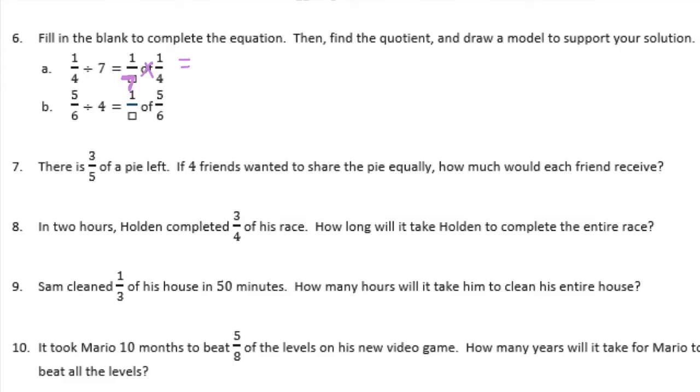Part B: 5 sixths divided by 1 fourth. We can make it 1 fourth of 5 sixths, which would be times, so that would be equal to 5 24ths.